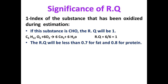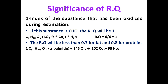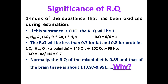If the substance is fat, RQ is 0.7, and for protein it is 0.8. This is because the molecules of these substances are poor in oxygen, so the volume of consumed oxygen will be greater than produced carbon dioxide, and RQ will be less than one. Normally, RQ of a mixed diet is 0.85. The RQ of brain tissue equals 1, indicating that carbohydrate is the only fuel used by the nervous system.